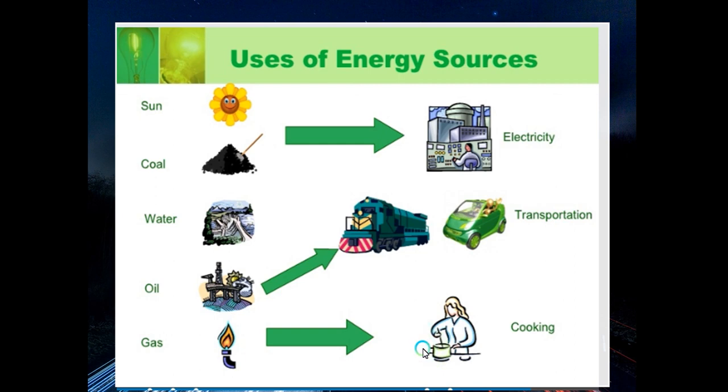What are the uses of energy sources? We have sun, coal, water, oil, and gas. Coal is used in industry. Water and oil - this oil can be used in transportation, you can see the train and car. Gas we use in cooking. These are the uses of energy sources in the olden days. Some trains used coal to power their engines, but now they use electricity.